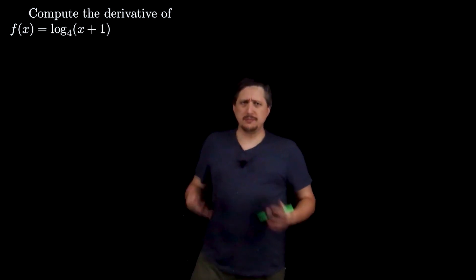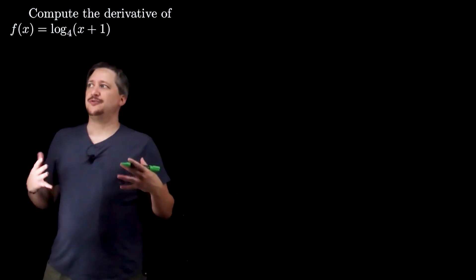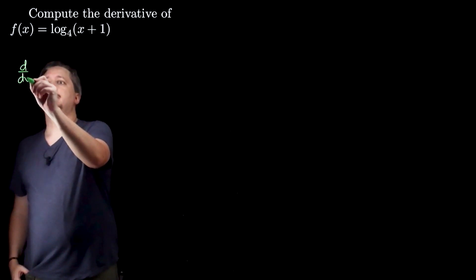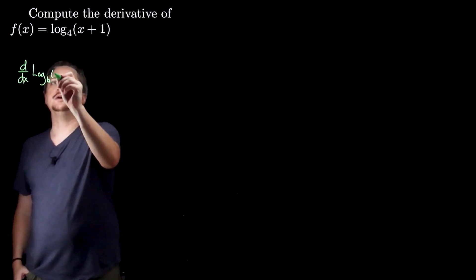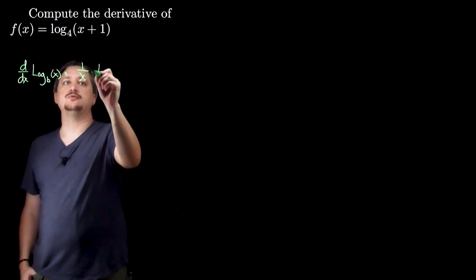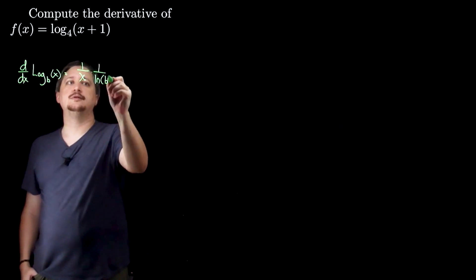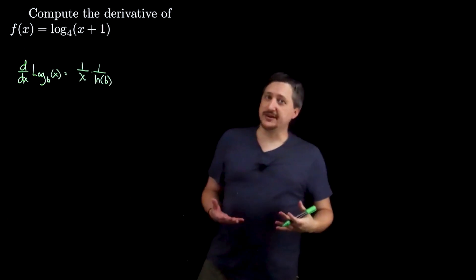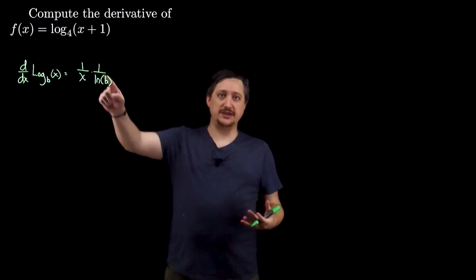Remember our rules for logs. In general, if we're taking the derivative of some log base b of x, this is 1 over x times 1 over the natural log of whatever the base is. In the nice case when you are using a natural log, that's base e, in which case natural log of e is 1.